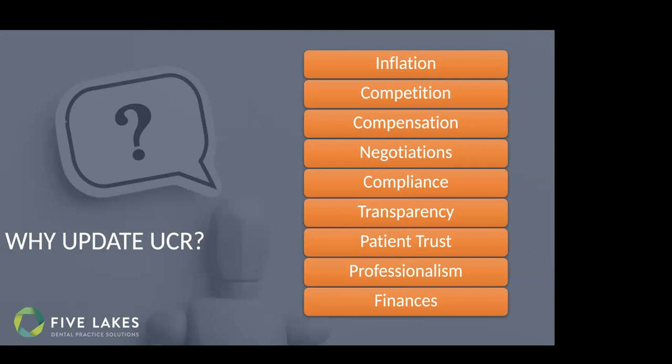We need to make sure we are constantly reviewing this to put ourselves in the best position. But what usually gets practices stuck is: how do you actually do this? Do we just go off some general recommendation from an organization? Do we randomly pick a number out of thin air, or just incrementally bump it up? There is some strategy behind it, so let's dive into that.